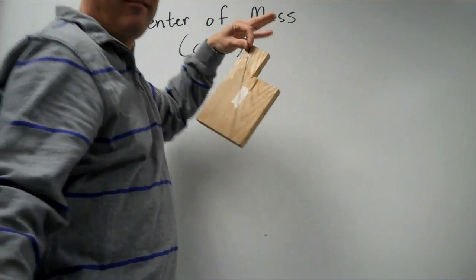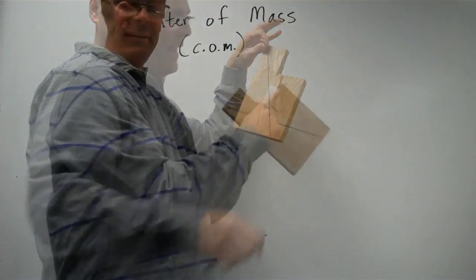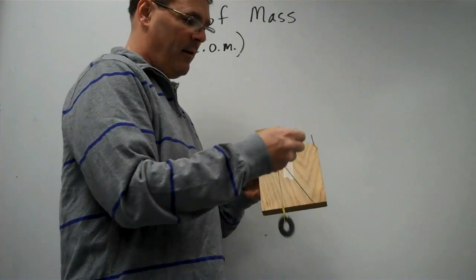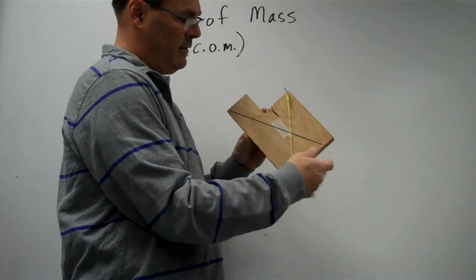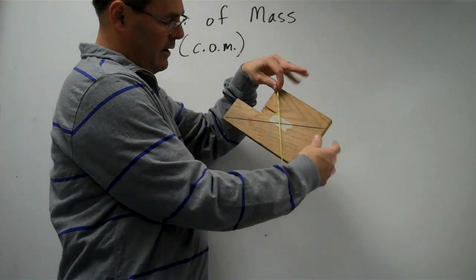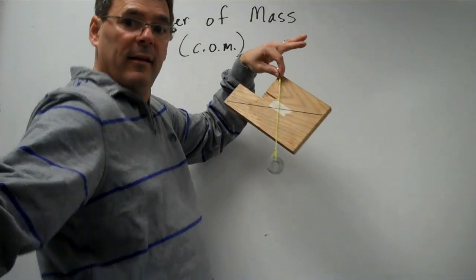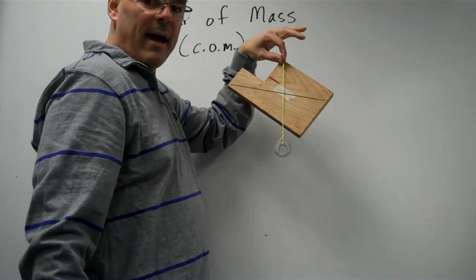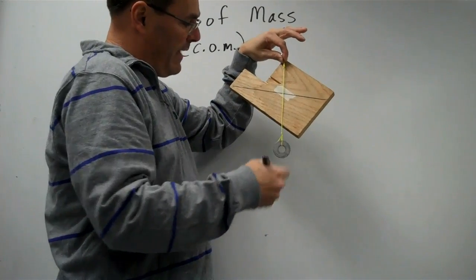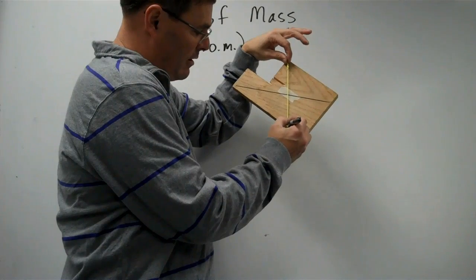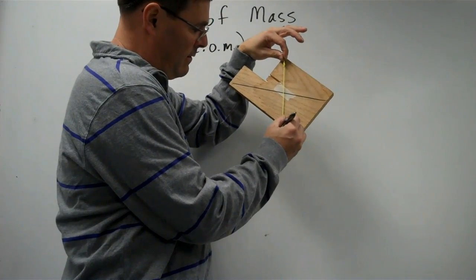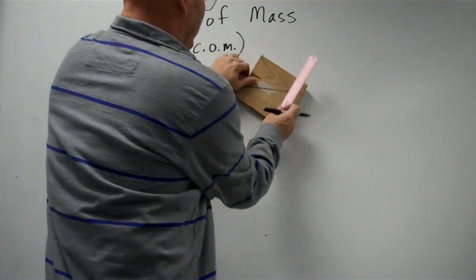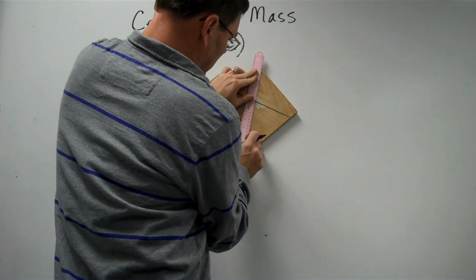Now I know the center of mass is somewhere along that line. I've moved the nail to another spot on the board. Again, I'll put my plumb bob on the nail, hang the board from the nail, and I know that my center of gravity is somewhere on that vertical line. I'll draw another dot where the line is and connect the space between the nail and the dot with my ruler.